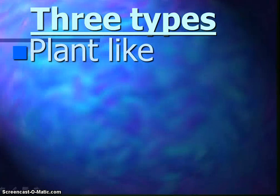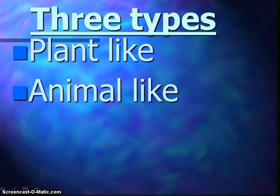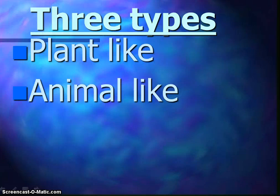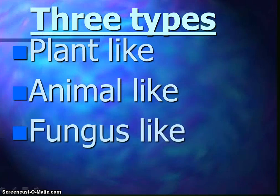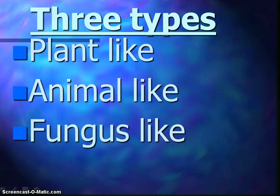There are three main types of protists. We have plant-like protists, which are the algae — they're photosynthetic, and plants would have evolved from the plant-like protists. We have animal-like protists, which we call protozoans, which ingest their food. And then fungus-like protists, like fungus, absorb their nutrients.